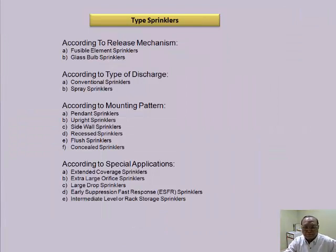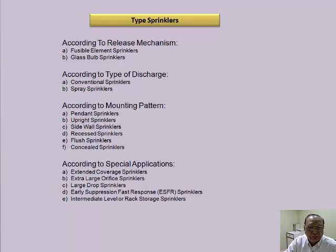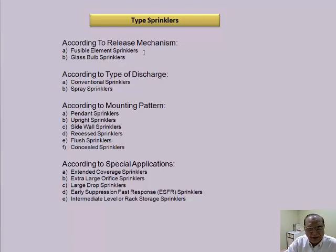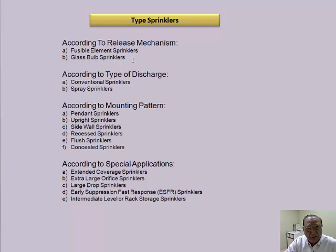Types of sprinklers. The types of sprinklers are classified according to the activation element — that is, the fusible element and the glass bulb sprinklers. Fusible elements are bimetallic connections which are temperature-rated and shall melt when the rated temperature is reached. Similarly, the glass bulb sprinklers operate on the same principle.